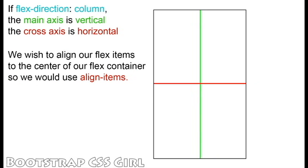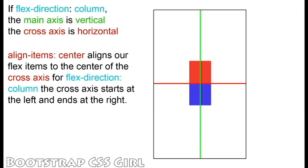Our FlexDirection is set to Column, and we would like to align our FlexItems to the center of our container horizontally, so we will use the AlignItems property. To align our FlexItems to the center horizontally, we set AlignItems to Center. This moves our FlexItems to the center of our cross-axis. With FlexDirection set to Column, the cross-axis is our horizontal axis.